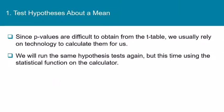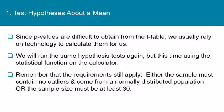We are about to run the same three hypothesis tests that we ran for the classical approach, but this time using the statistical function on the calculator. Remember that the requirements still apply: either the sample must contain no outliers and come from a normally distributed population, or the sample size must be at least 30.